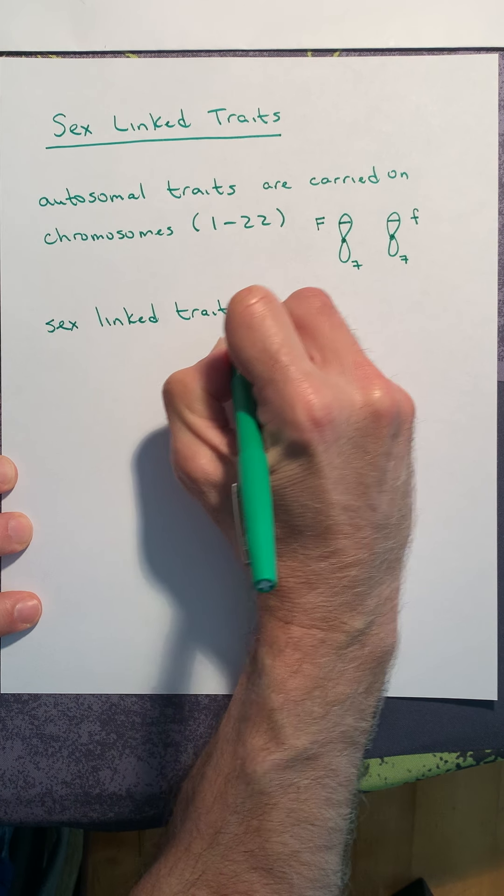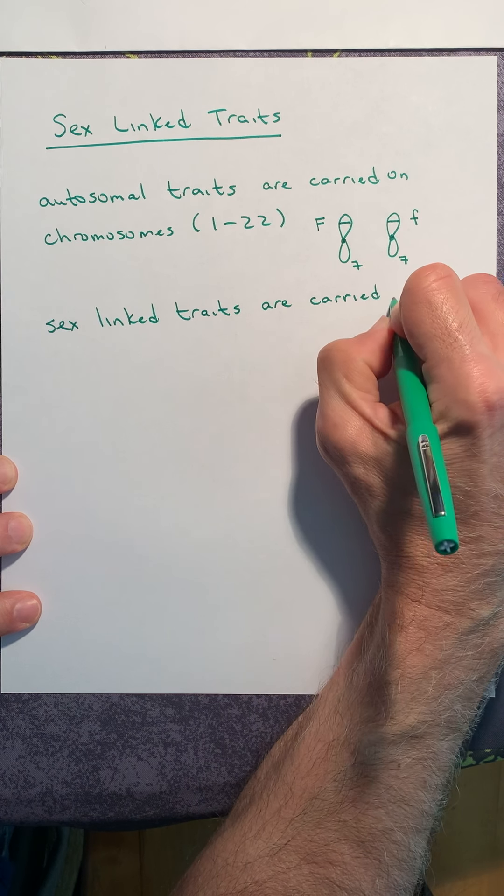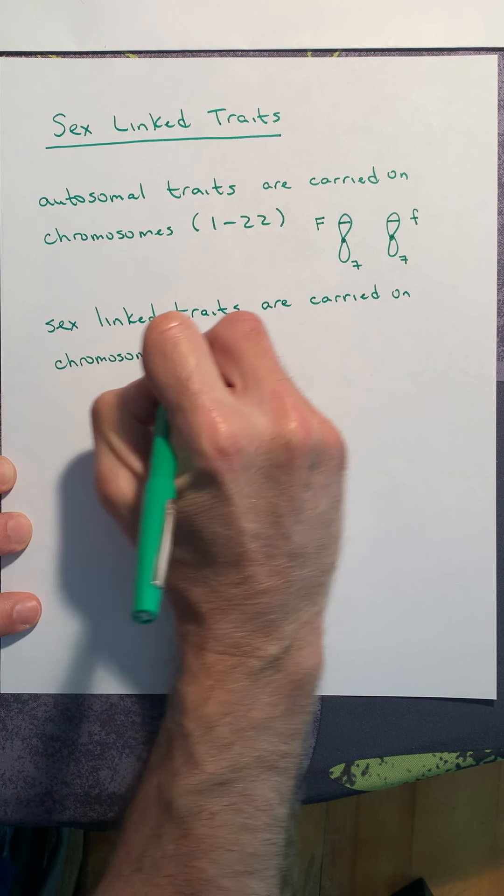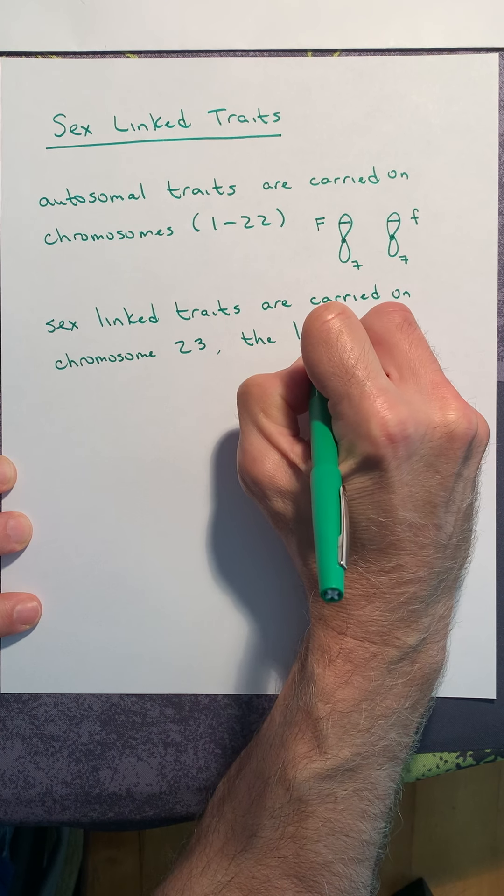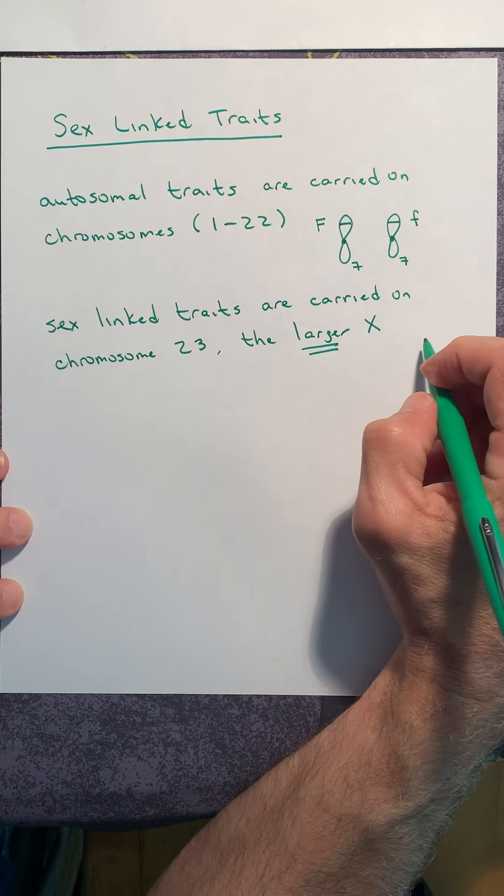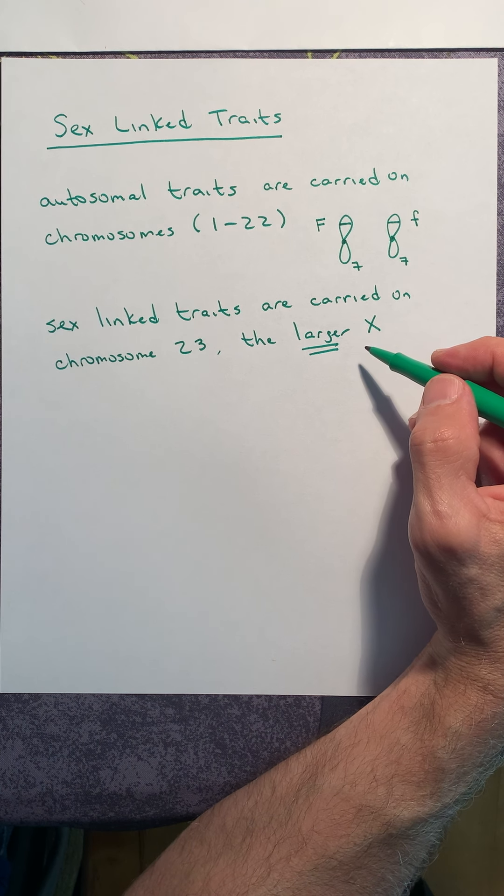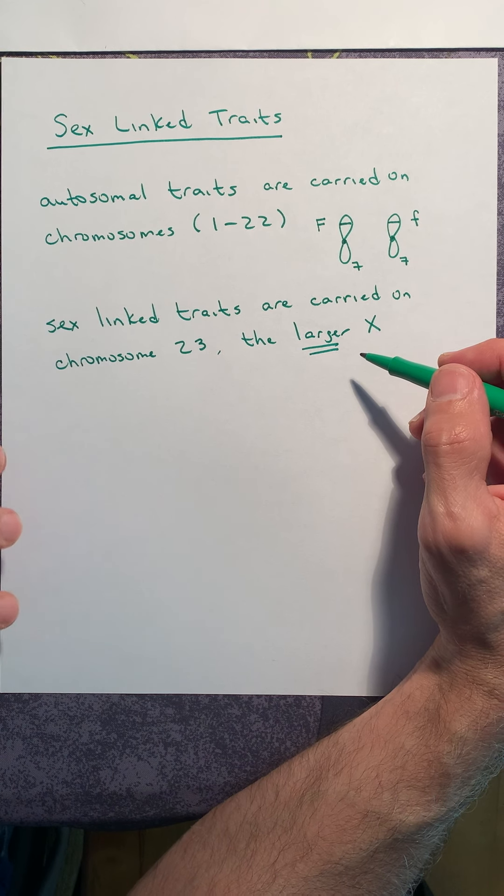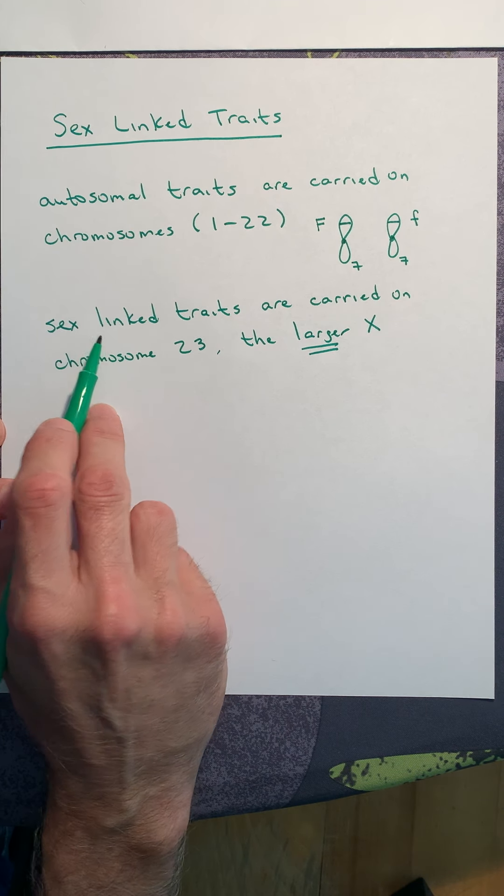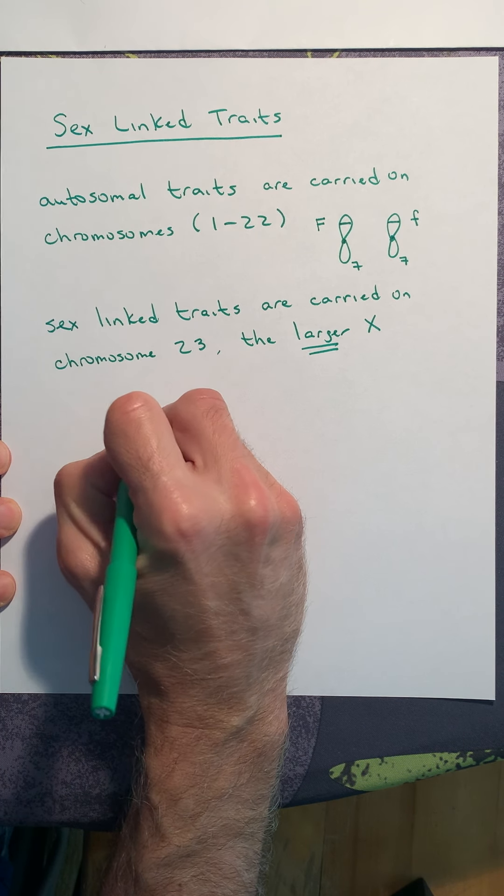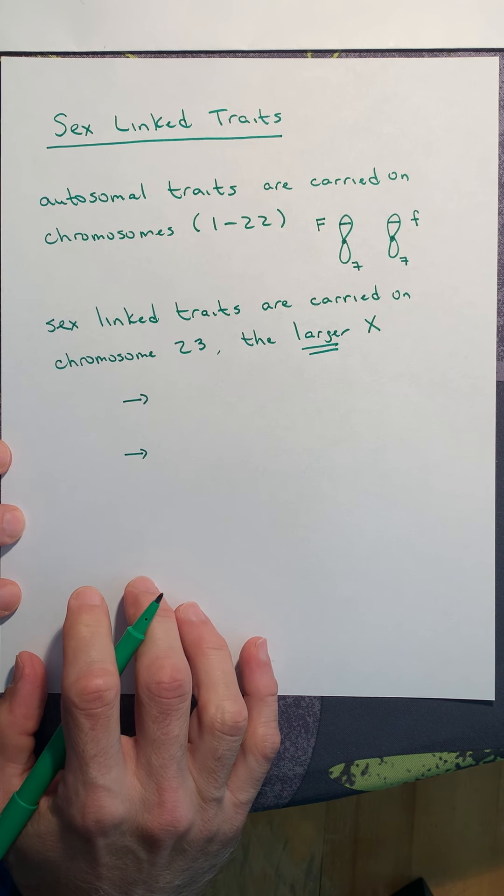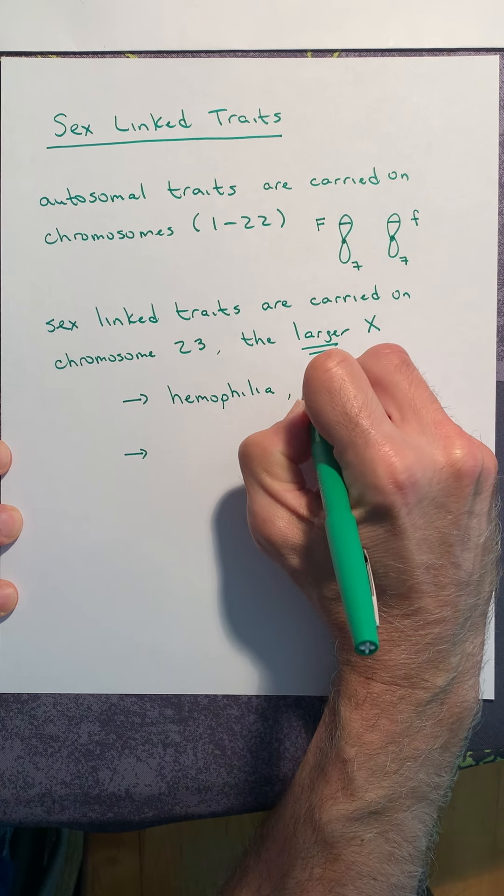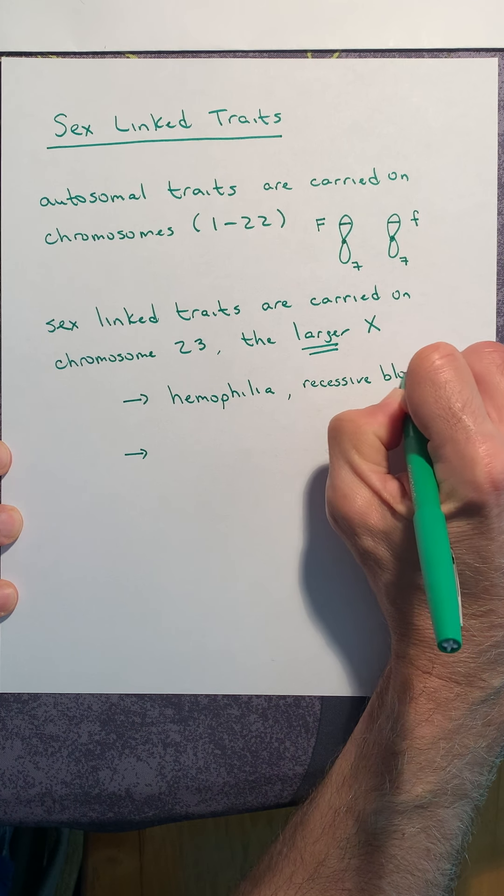What we're going to start today is called sex linked. So sex linked traits are carried on chromosome number 23. And it's the larger X chromosome. When you guys come back to me for IB, there are certain alleles that are carried on that smaller sex chromosome in males carried on that Y. Those are called holandric traits. We're not going to talk about those now. We will talk about those later in IB. So when we talk about sex linked now, what we're talking about are the larger X chromosomes.